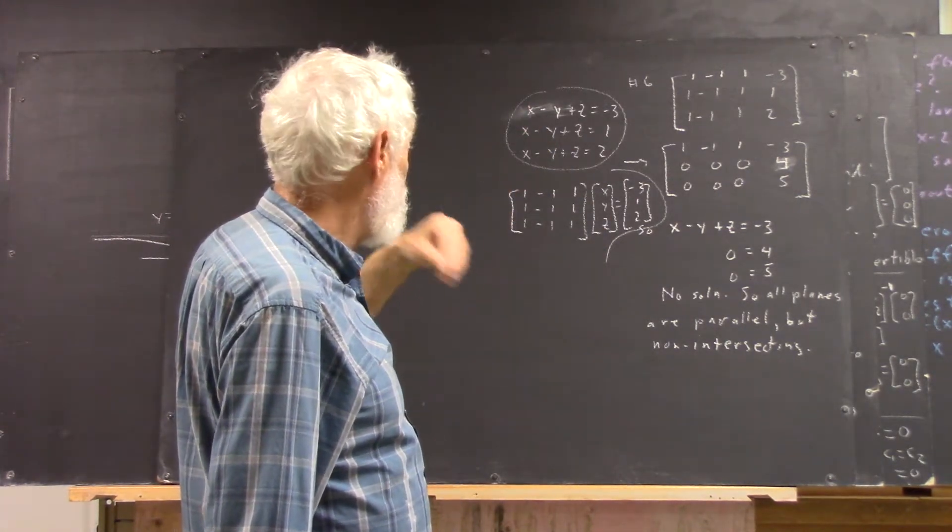So the main task here is write down the augmented matrix and reduce it, or if you wish, write it as a matrix equation. We could also have written it as: the matrix [1, -1, 1; 1, -1, 1; 1, -1, 1] multiplied by [x, y, z] equals [-3, 1, 2].